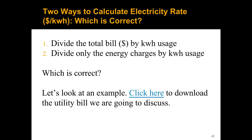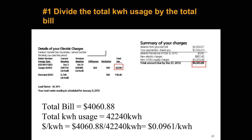Take a second to think about what is correct in this example. If you have the slideshow open, you can click the link to download the utility bill we're going to use in the next couple of examples. Starting with method one: we take the total kilowatt hours, which is 42,240, and divide by the total bill, which is $40,060.88. That gives us 9.61 cents per kilowatt hour.